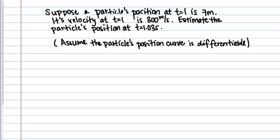Let's work through the following example together. Suppose a particle's position at time equals 1 is 7 meters. Its velocity at time equals 1 is 300 meters per second. Estimate the particle's position at time equals 1.03 seconds.